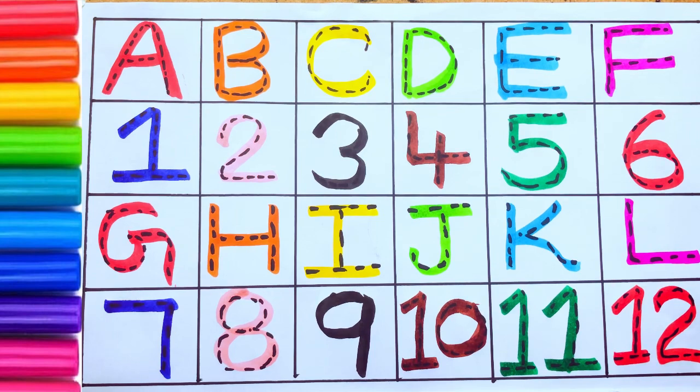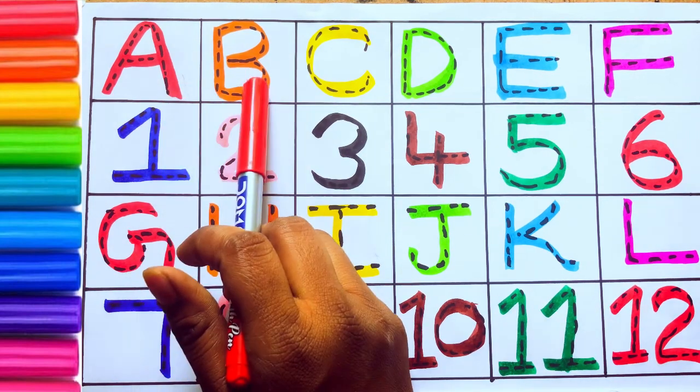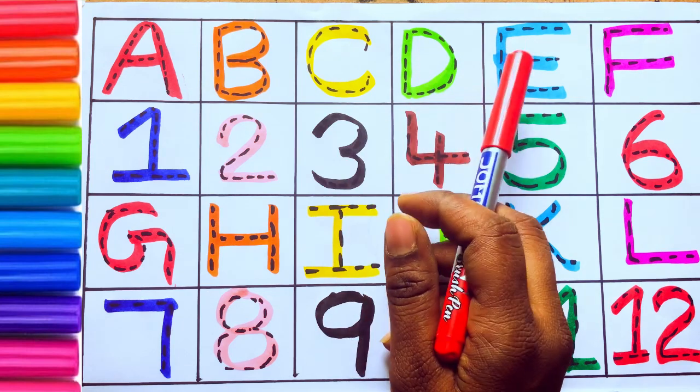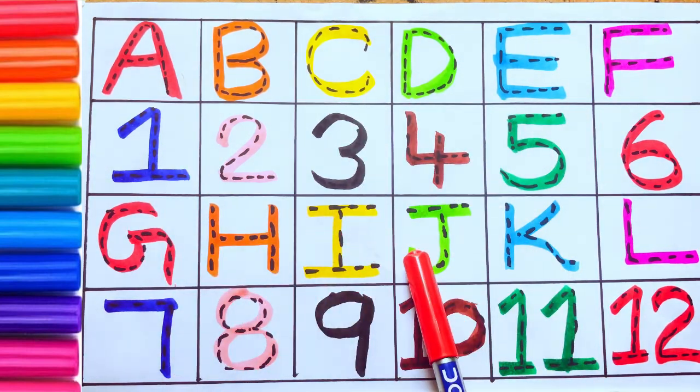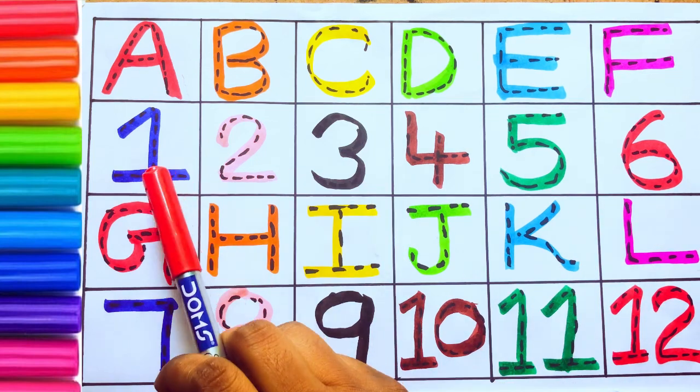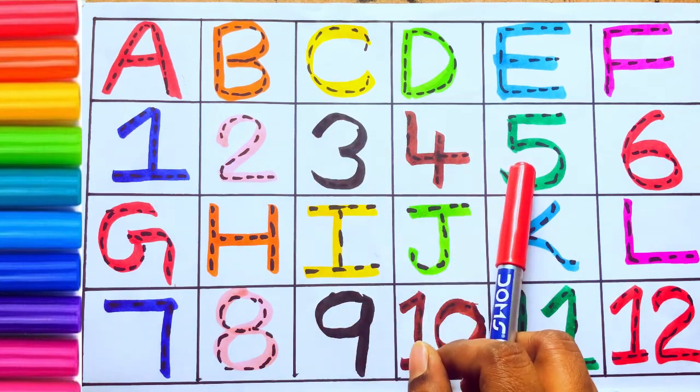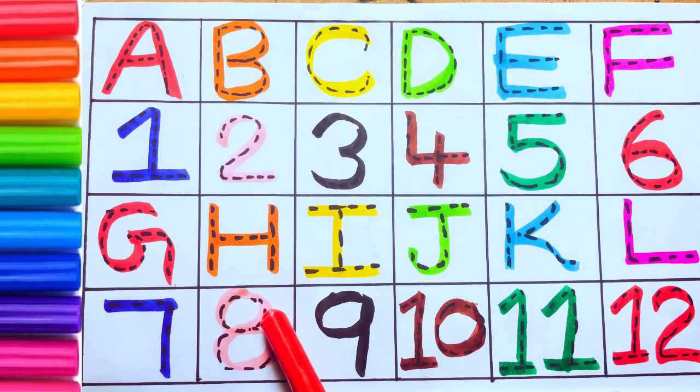Once again, let me review alphabets and numbers. A, B, C, D, E, F, G, H, I, J, K, L, 1, 2, 3, 4, 5, 6, 7, 8, 9, 10, 11, 12.